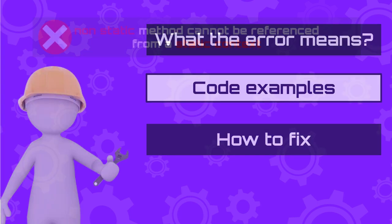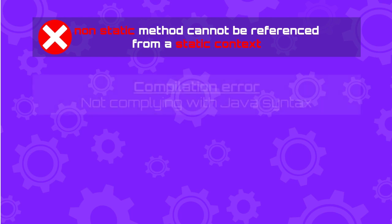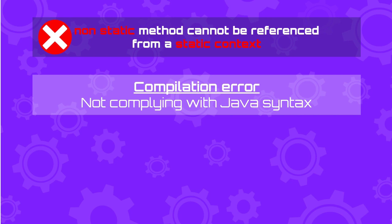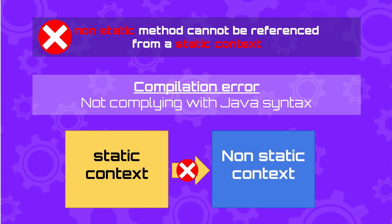Let's start by explaining what 'non-static method cannot be referred from static context' means. It is a compilation error, which means that the code is not following the language rules — in other words, it doesn't comply with the Java syntax. You will see this error in Java when you are trying to call a non-static method from a static context — in other words, when you are trying to access an instance method from a static method or static block.